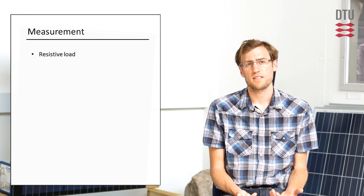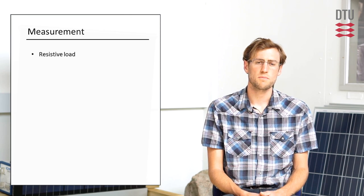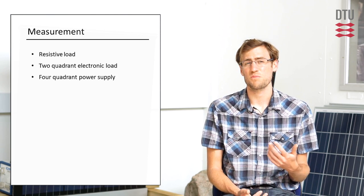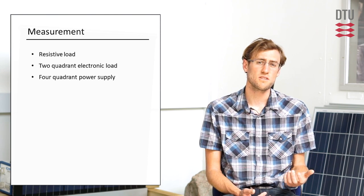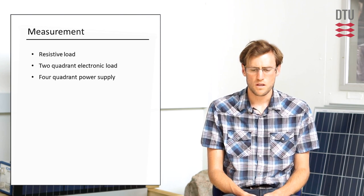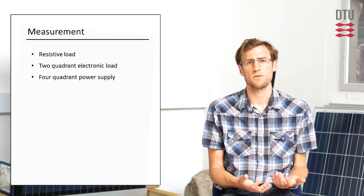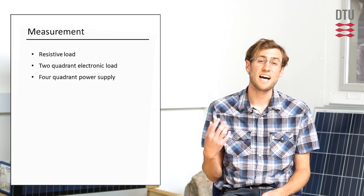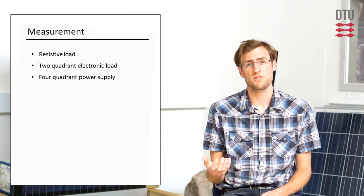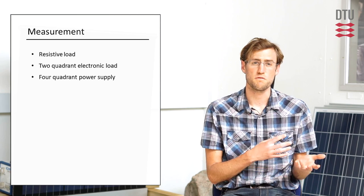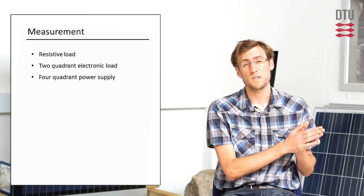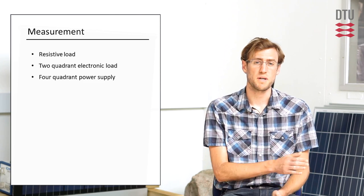To get a more accurate estimate of the IV curve, you would use something like a two quadrant electronic load or a four quadrant power supply. One of the reasons it's more accurate than a variable resistor is because you can get a better estimate of ISC. So when you use an electronic load, we consider the PV device an ideal current source, a constant current source. So the convention with constant current sources is to load them in voltage. So we keep the load in constant voltage mode, we step in voltage and measure current from ISC to VOC.